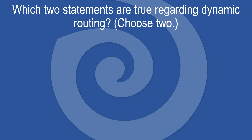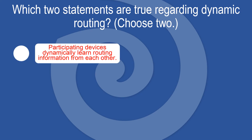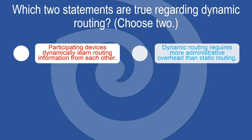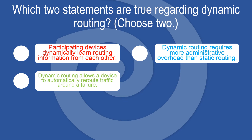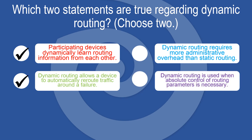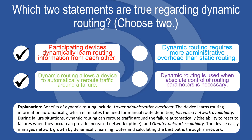Which two statements are true regarding dynamic routing? Choose two. Participating devices dynamically learn routing information from each other. Dynamic routing allows a device to automatically reroute traffic around a failure. Benefits of dynamic routing include lower administrative overhead, automatic route learning, increased network availability during failures, and greater network scalability — the device dynamically learns routes and calculates the best paths through the network.